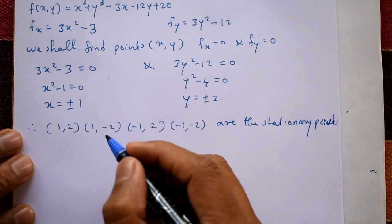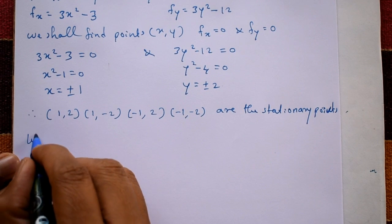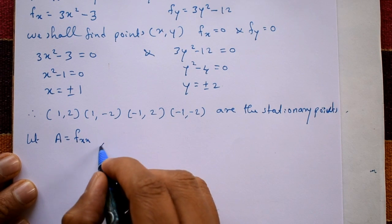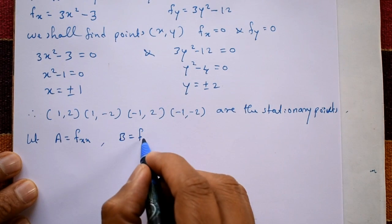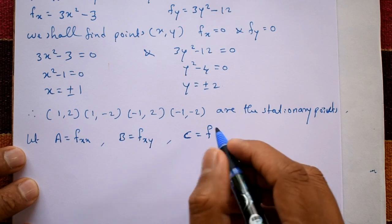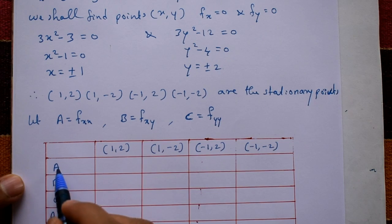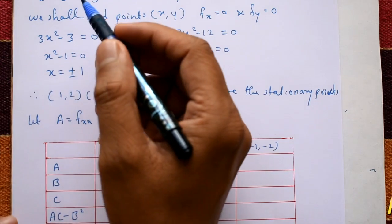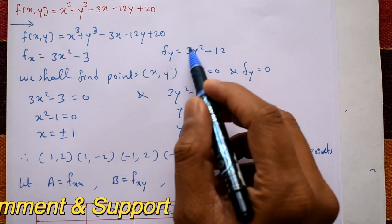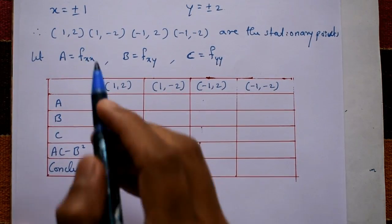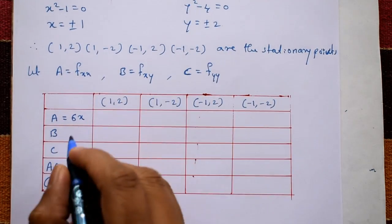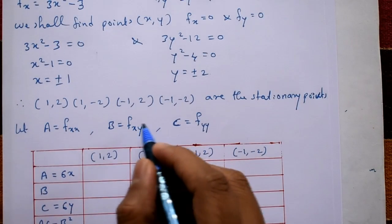Next, let A = ∂²f/∂x² (differentiate twice with respect to x), B = ∂²f/∂x∂y (differentiate once with respect to x and once with respect to y), and C = ∂²f/∂y² (differentiate twice with respect to y). Computing: A = 6x, B = 0, and C = 6y.